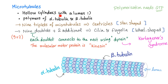What are microtubules? They are hollow cylinders with a lumen. They are polymers of alpha tubulin and beta tubulin. If you have nine triplets of microtubules, you will end up with a centriole. If you have nine doublets of microtubules plus two additional microtubules in the center, you have cilia or flagella. These triplets are star-shaped. These doublets are wheel-shaped. Each doublet connects to the other doublets using dynein, and a defect in dynein is involved in a disease called Kartagener's syndrome. Here's your microtubule — alpha tubulin, beta tubulin — and here is the lumen.